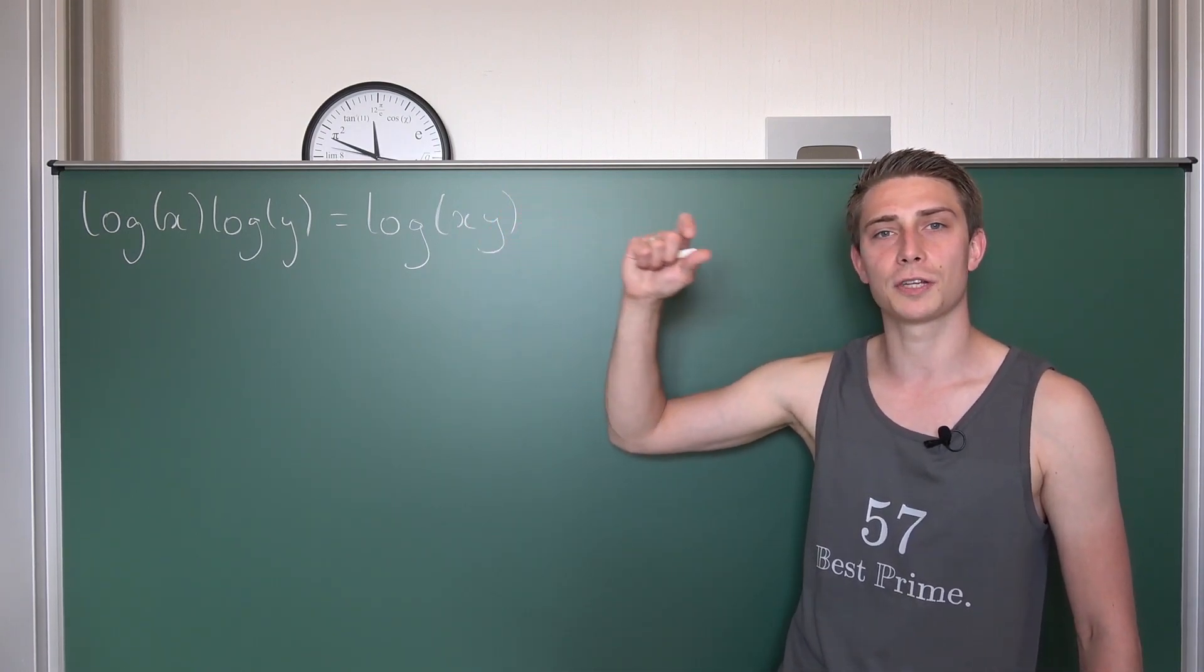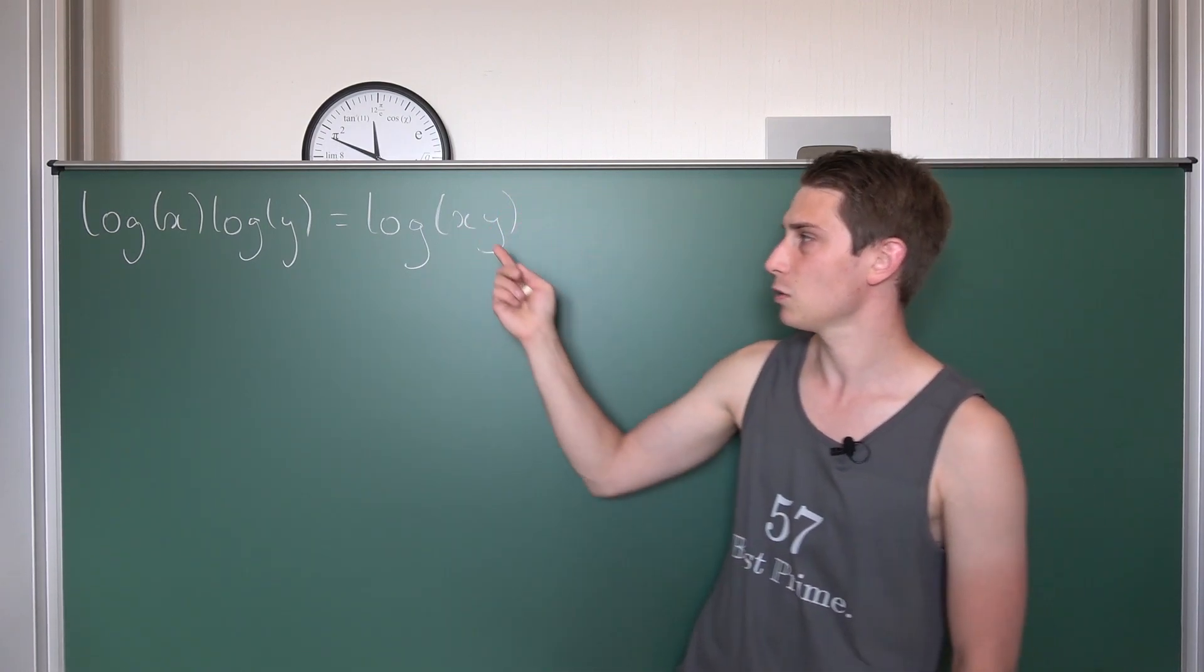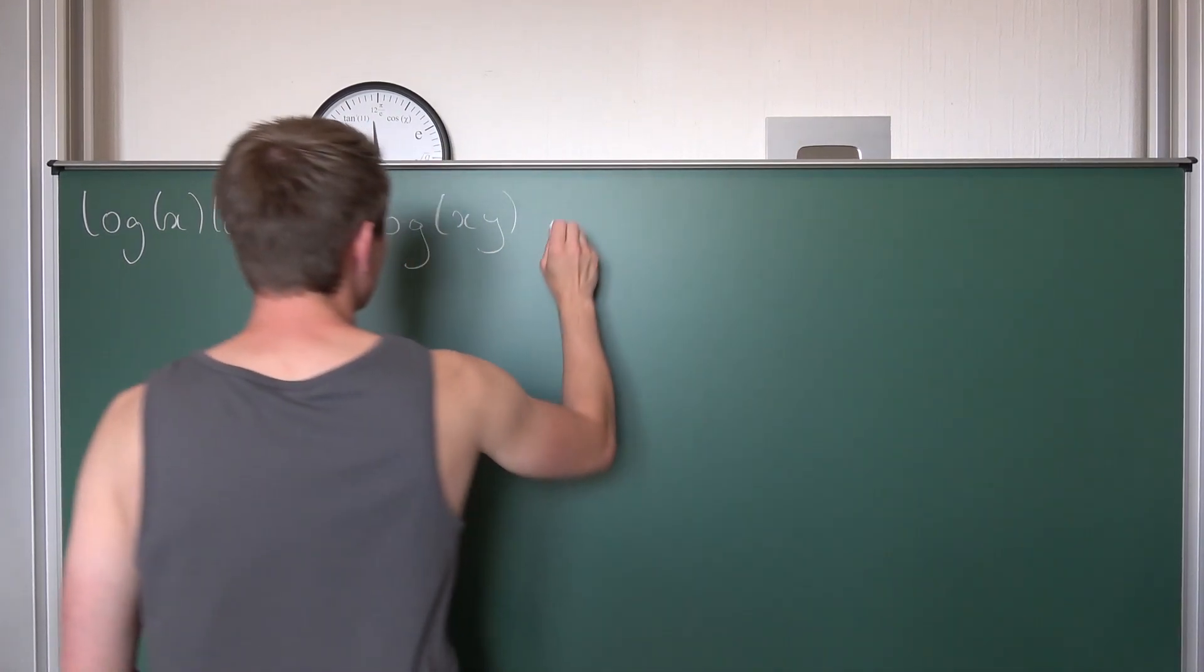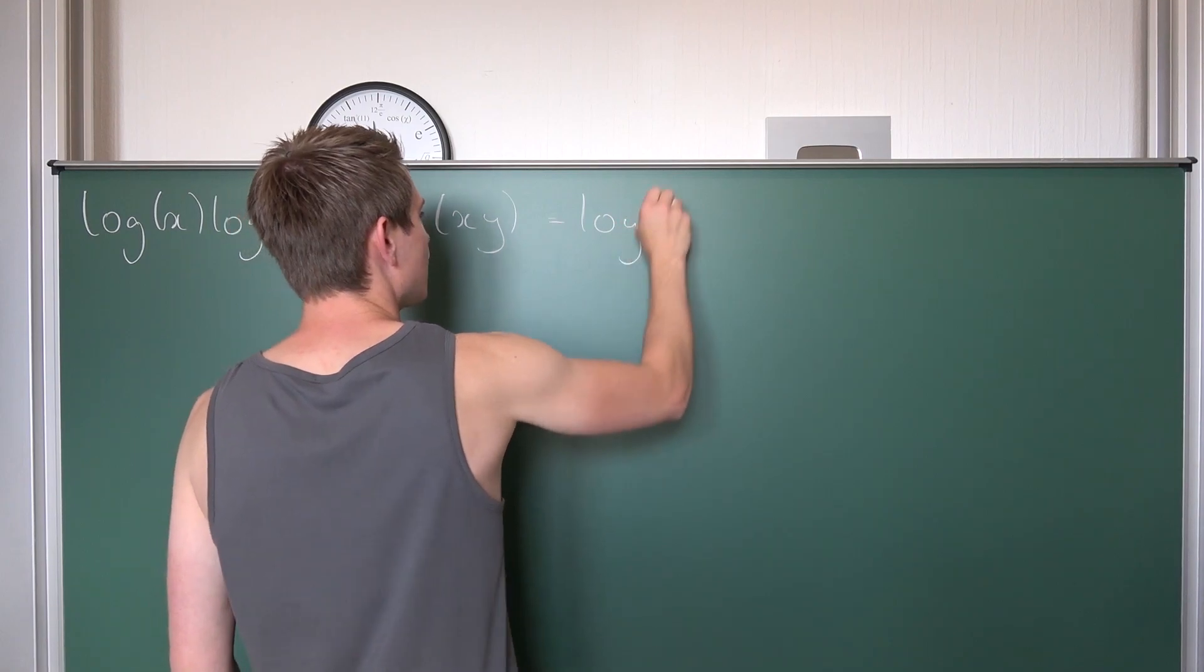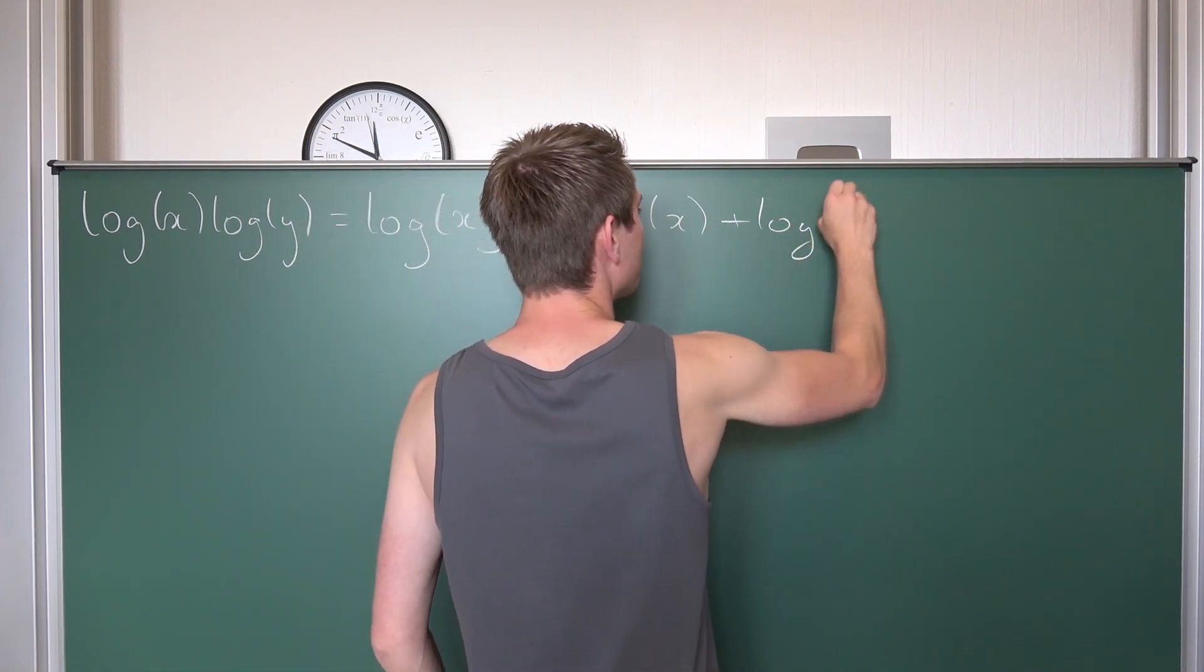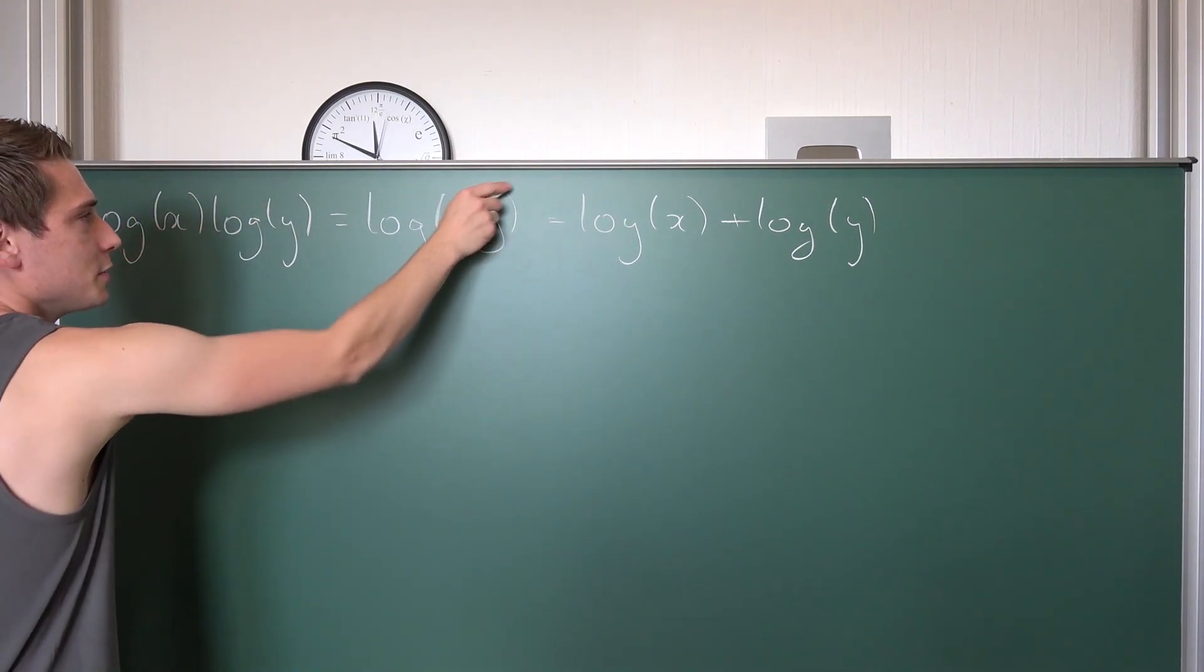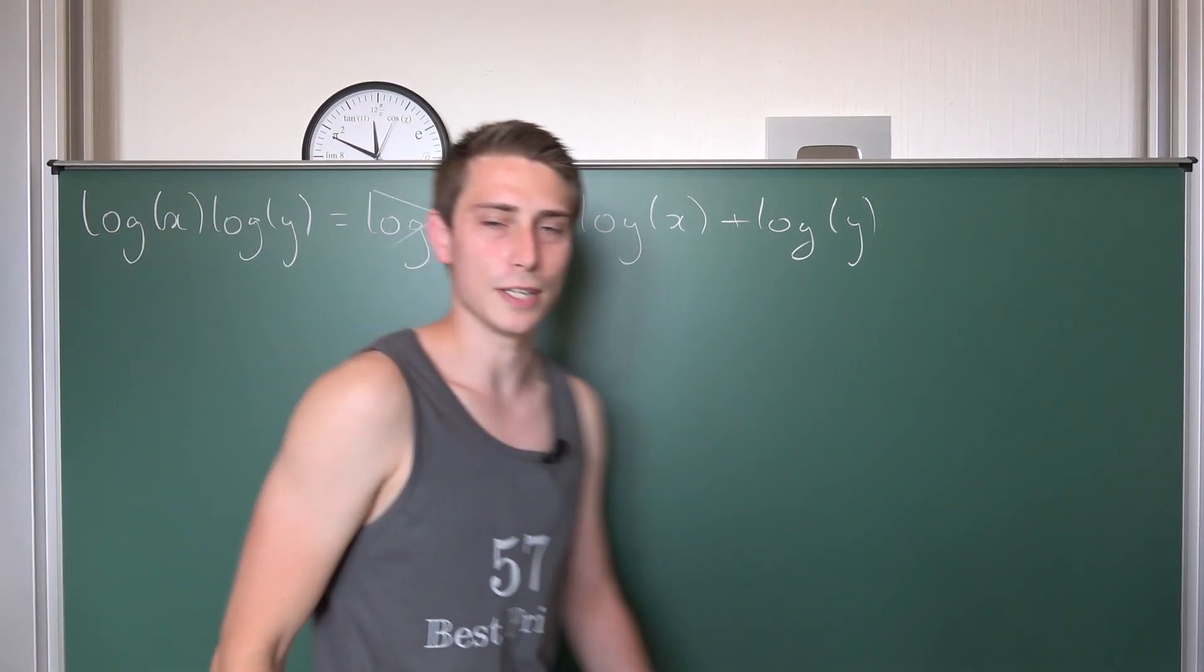At first we are going to make use of the well-known logarithm property that logarithm of x times y is logarithm of x plus logarithm of y. Meaning that's log of x, log of x plus log of y. Now, we already came pretty far. This thing can leave itself because we don't need it anymore.